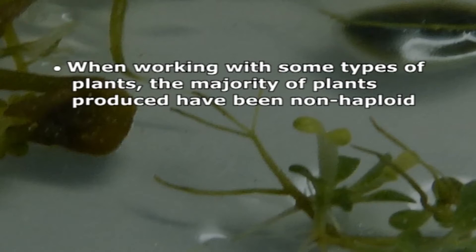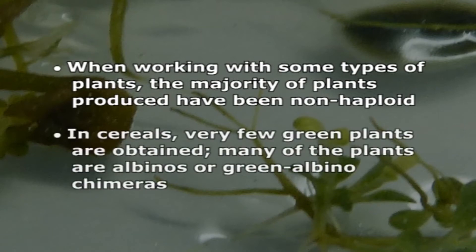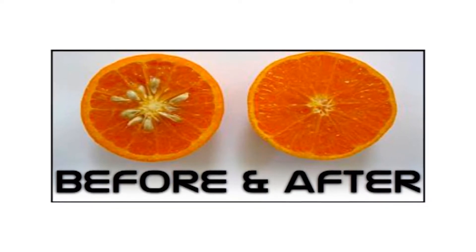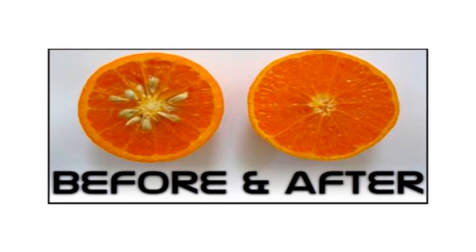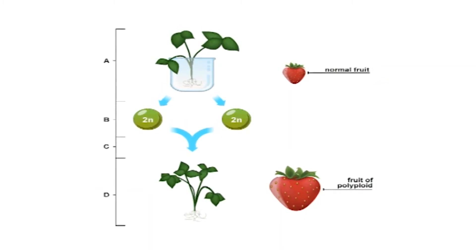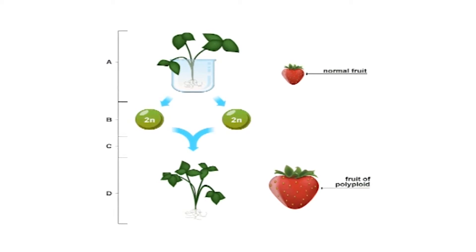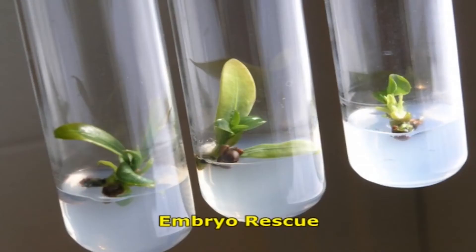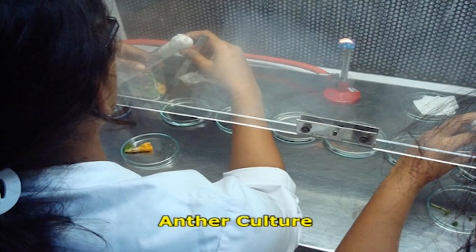There are also some disadvantages of anther culture. When working with some types of plants, the majority of plants produced have been non-haploid. In cereals, very few green plants are obtained and many of the plants are albinos or green-albino chimeras. Haploid plants are beneficial because they carry only one allele of each gene; therefore, any hidden mutation is apparent, and plants with lethal genes are excluded from the gene pool. One can harvest homozygous diploid or polyploid plants in breeding. Haploid plants can be obtained through embryo rescue, anther culture, and microspore culture.